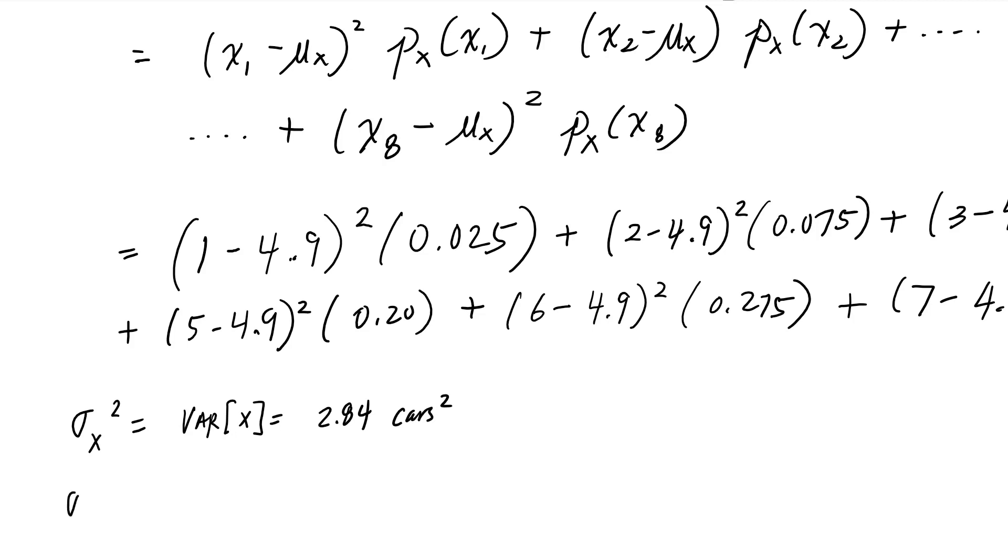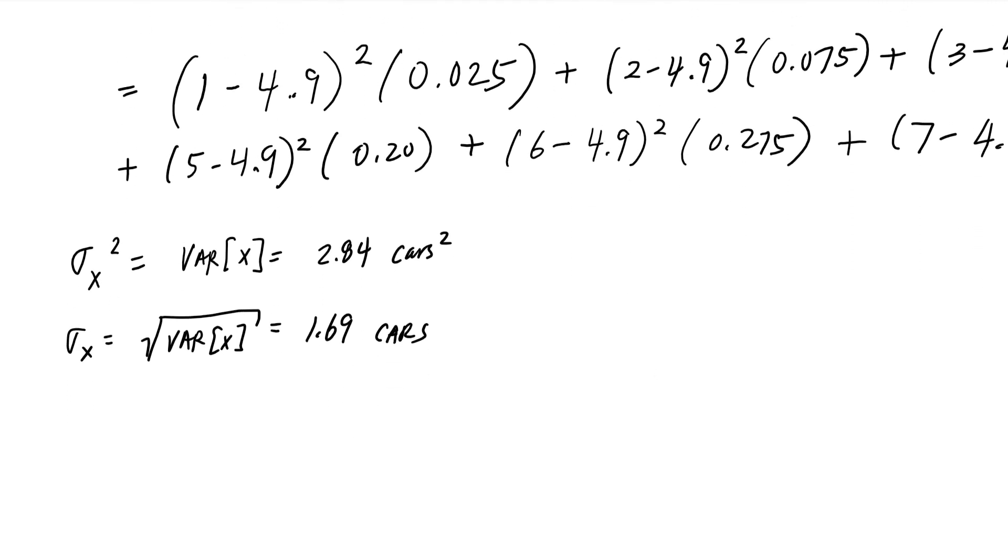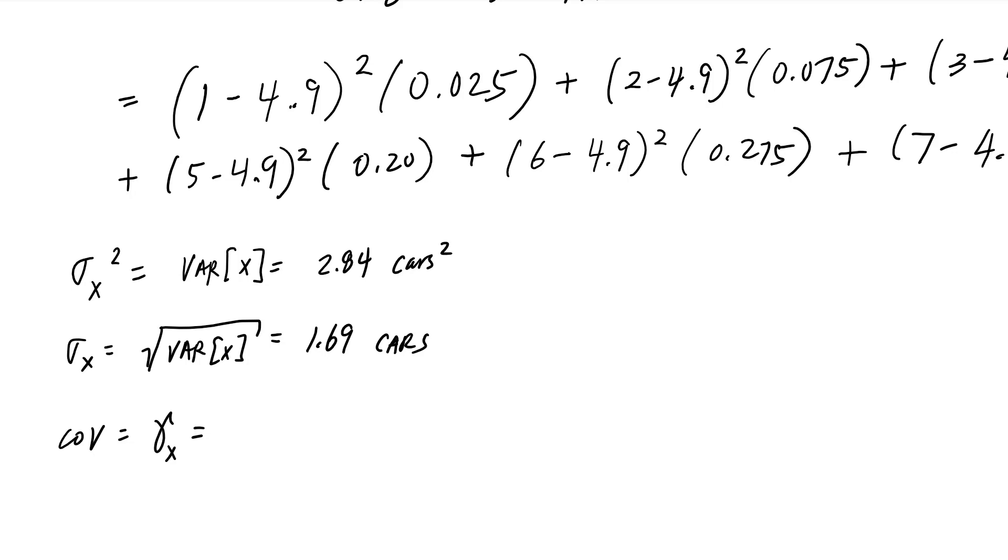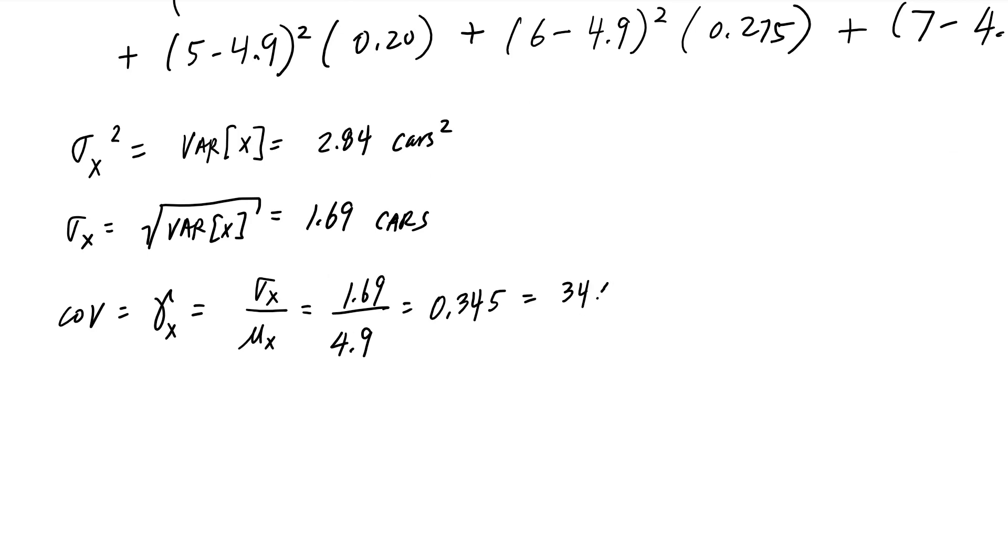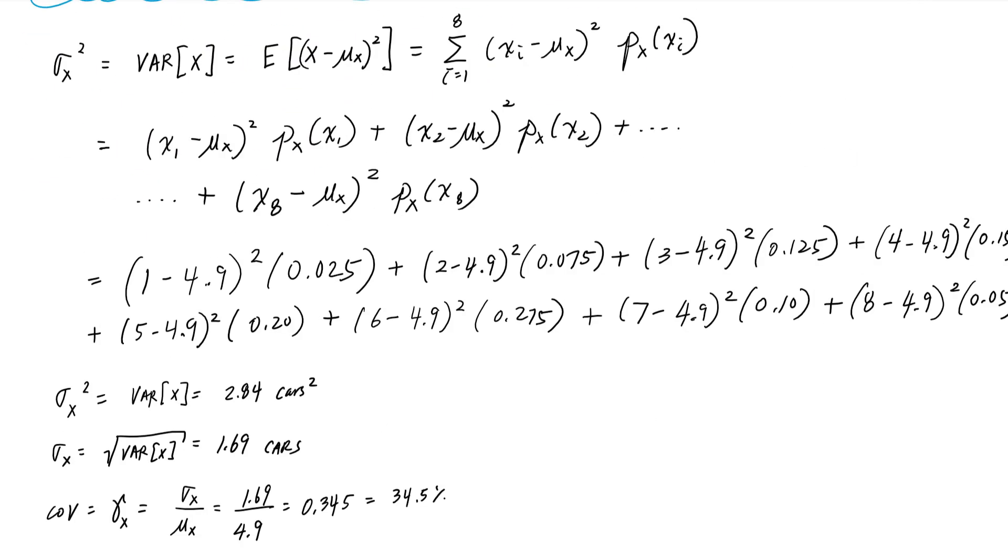And then the standard deviation would be the square root of this variance, which is 1.69 cars. And then I could get a measure of the coefficient of variation, which is the standard deviation divided by the mean. And this would be 1.69 over 4.9, or 34.5%. And this coefficient of variation gives us a relative measure between random variables about how much dispersion I have in my data set.